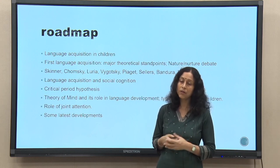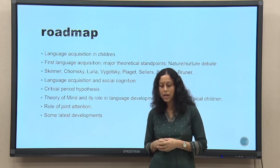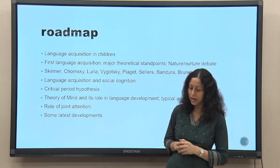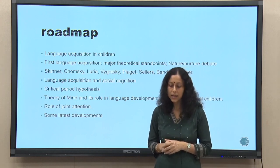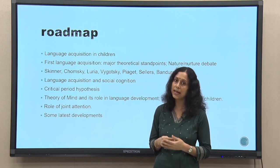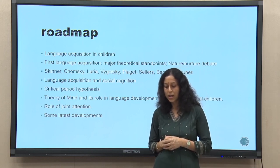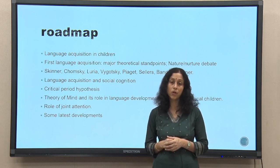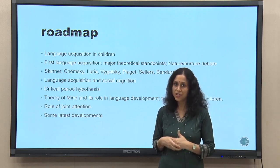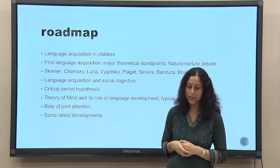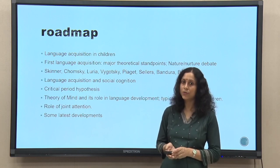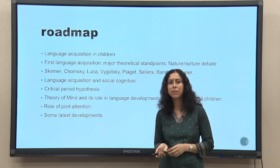We will also be talking about language acquisition in terms of social cognition, and two very important concepts: the notion of the critical period hypothesis and the idea of the theory of mind. Theory of mind and its role in language development in both typical and atypical children will be covered. We will then move to the role of joint attention in shaping language acquisition, and conclude with the latest developments in this domain. This is the road map we will follow.